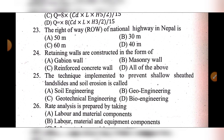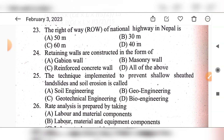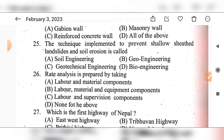Question 25: The technique implemented to prevent shallow-seated landslide and soil erosion is called — option A: soil engineering, option B: geoengineering, option C: geotechnical engineering, option D: bioengineering. The answer is option D: bioengineering.